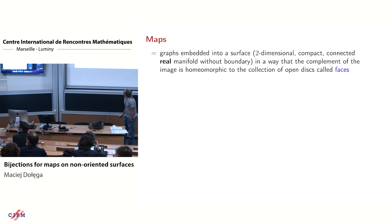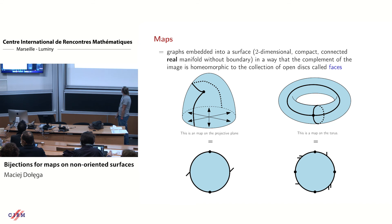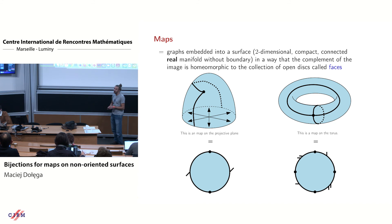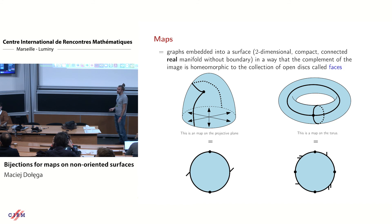Let me start from the definition of a map. In this talk, a map is a graph which is embedded into a surface, and it's very important that the surface is an arbitrary real two-dimensional connected compact manifold without boundary. So it can be orientable, it can be non-orientable, and it can have arbitrary genus.